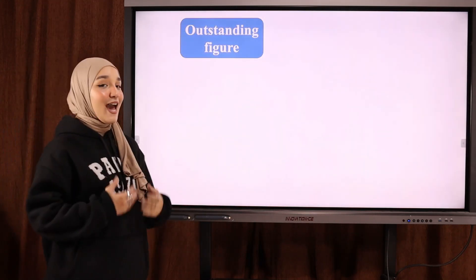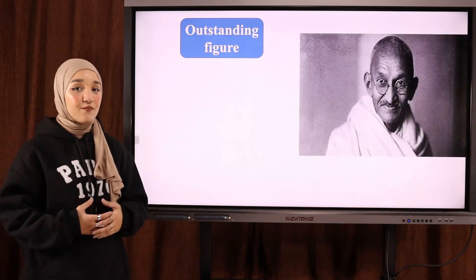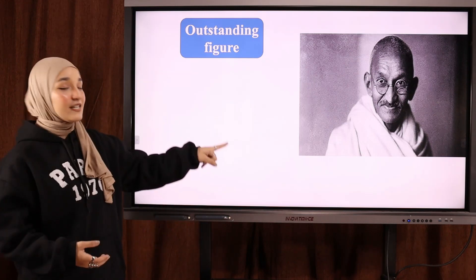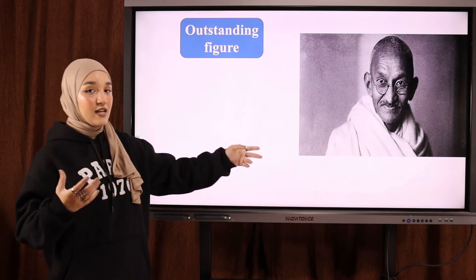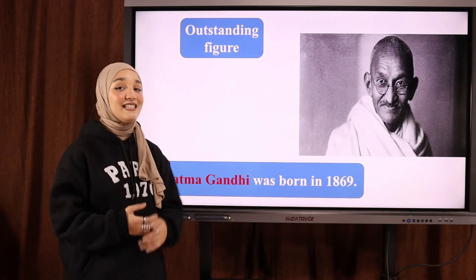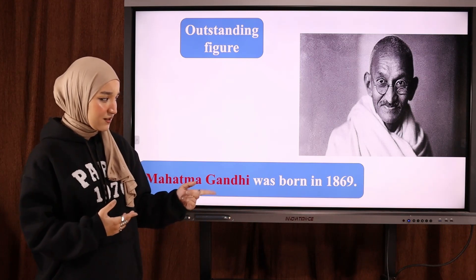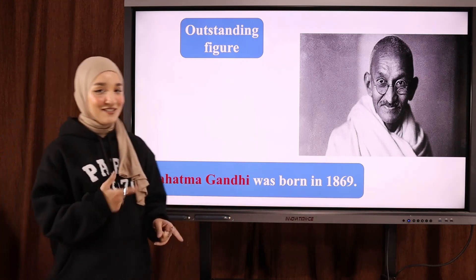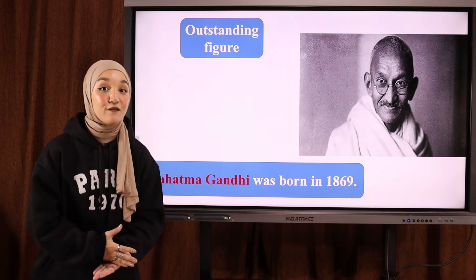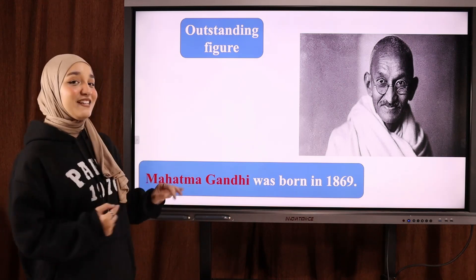The next word is 'outstanding figure' — شخصية بارزة. An outstanding figure is a very important person from history — a writer (كاتب), a president (رئيس), etc. Example: everyone knows Mahatma Gandhi. Mahatma Gandhi was born in 1869. So outstanding figure means شخصية بارزة — a very important historical person.